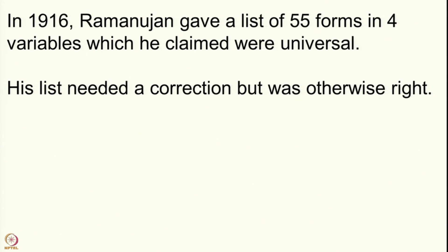His list needed a small correction — there was one form which had to be deleted from the list, but otherwise it was right. However, when a person like Ramanujan makes a mistake like this, a natural question arises: how are you going to determine that some form is universal? Already Lagrange's theorem took considerable effort to prove, so proving that all the remaining 54 forms are universal is not easy and one is prone to making mistakes.